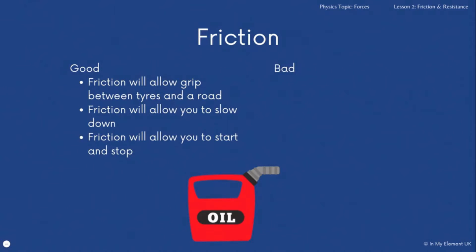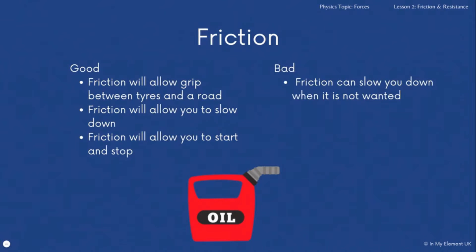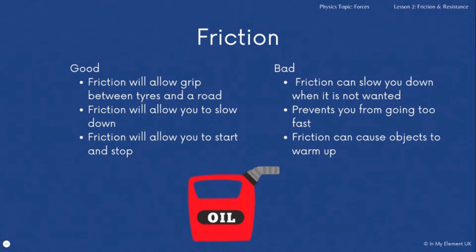The bad points of friction: it can slow you down when it's not wanted and prevent you from going too fast if you want to increase your speed. It can also cause objects to warm up and, because of that warming, it wastes energy.